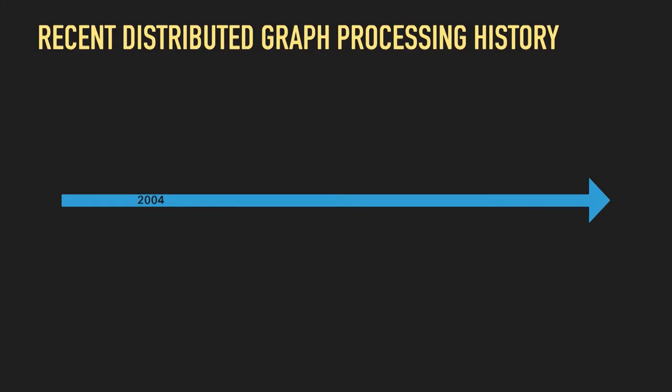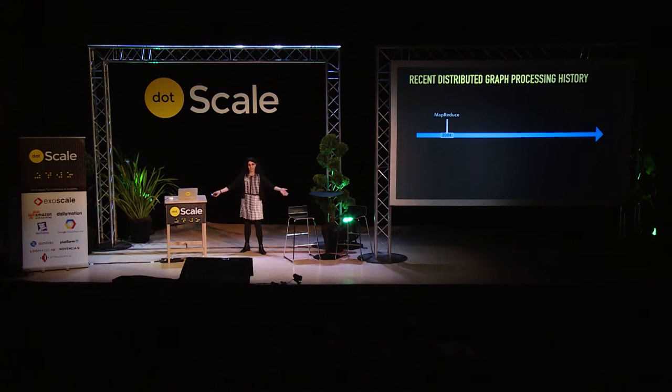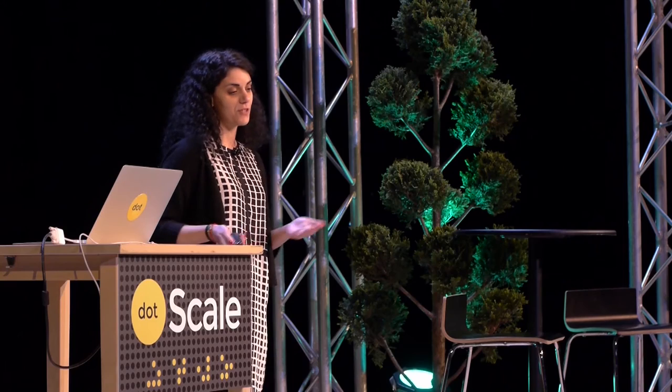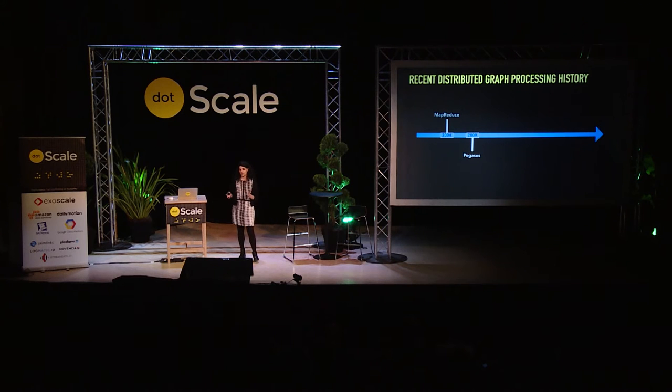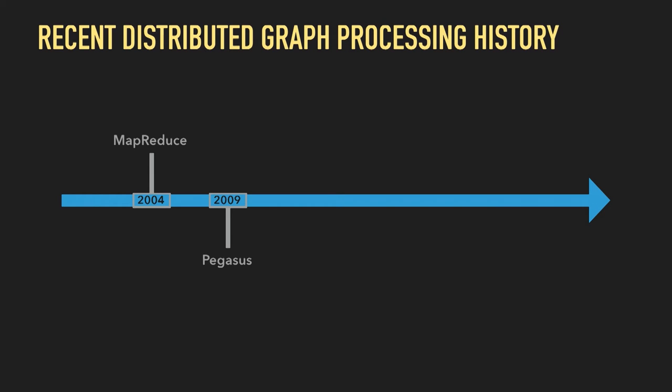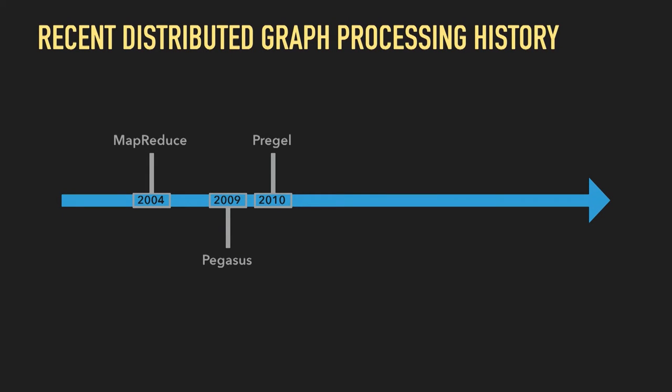We have tools to write these applications. Let's go through the recent graph processing history, starting in 2004. MapReduce changed everything. MapReduce inspired similar high-level abstractions in many domains, including graph processing. Of course, someone tried to use MapReduce for graph processing. One of the first systems that did that was Pegasus in 2009. They did graph processing with a two-stage MapReduce job. Going through the file system after every iteration didn't work very well. So a year later, Google published the Pregel paper, which introduces the vertex-centric abstraction for graph processing.